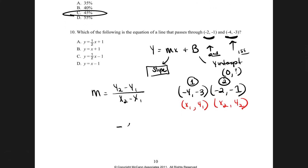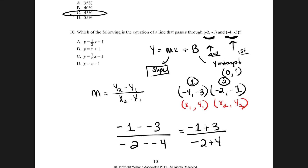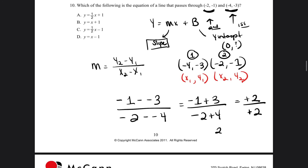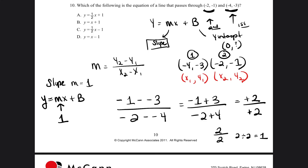So let's find the slope: y2 minus y1 is negative 1 minus negative 3, over x2 minus x1 which is negative 2 minus negative 4. When you have two negative signs next to each other, they become a plus sign. So it would be negative 1 plus 3 over negative 2 plus 4. Negative 1 plus 3 equals positive 2, and negative 2 plus 4 is positive 2 as well. 2 over 2 equals 1. So we know that our slope, m, is going to be equal to 1. We can look at our answer choices and eliminate A and eliminate C, because those have 1 half but it's supposed to be 1.